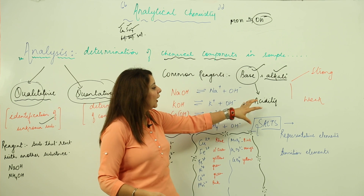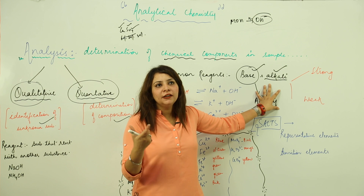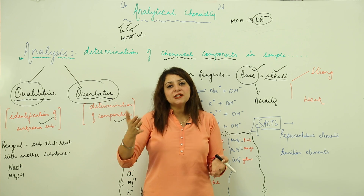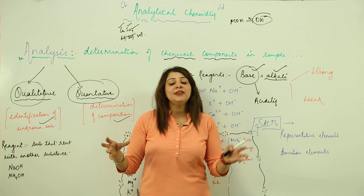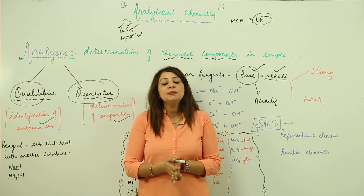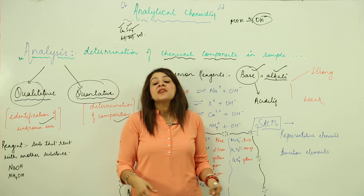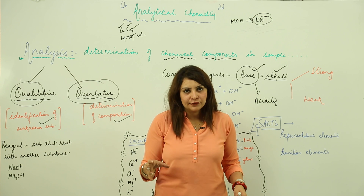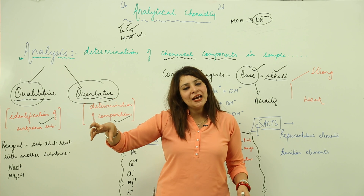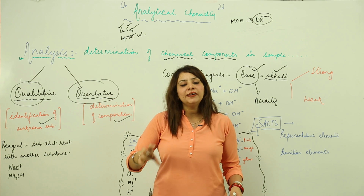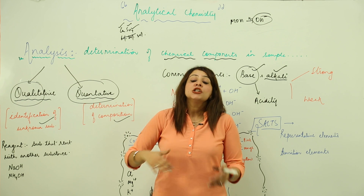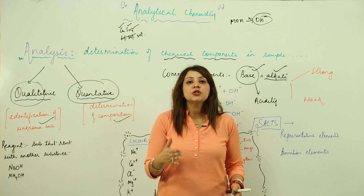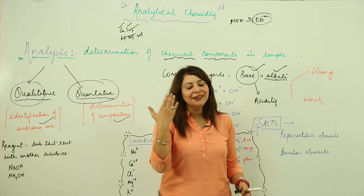Regarding acidity and basicity: the basicity of an acid refers to how many hydrogen ions that acid can give. If an acid can give one hydrogen ion, we say it is monobasic. If it has the ability to give two hydrogen ions, we say it is dibasic. Likewise, bases have acidity — the power to give hydroxide ions refers to the acidity of the bases.